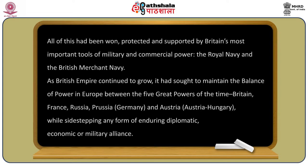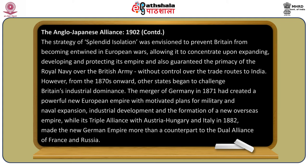As the British Empire continued to grow, it sought to maintain the balance of power in Europe between the five great powers: Britain, France, Russia, Prussia (Germany), and Austria-Hungary, while sidestepping any form of enduring diplomatic, economic, and military alliance. The strategy of splendid isolation was envisioned to prevent Britain from becoming entwined in European wars, allowing it to concentrate upon expanding, developing, and protecting its empire, and to guarantee the primacy of the Royal Navy over trade routes to India.